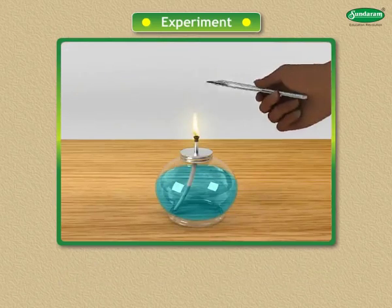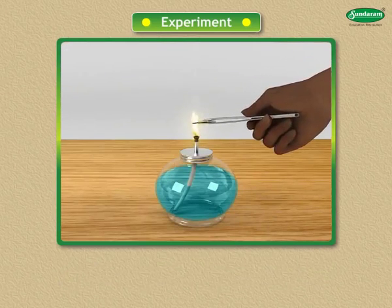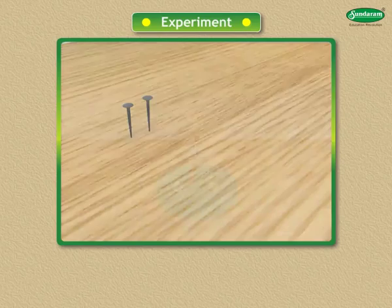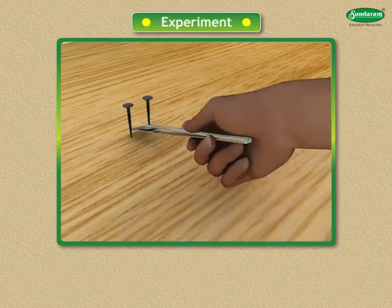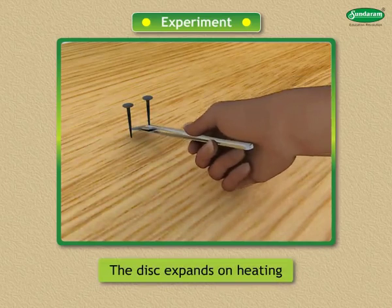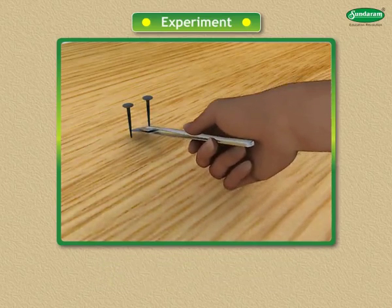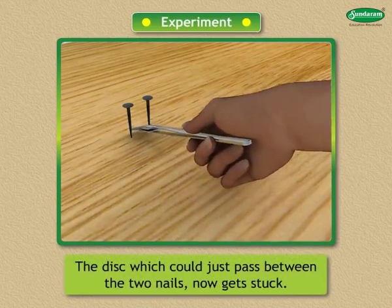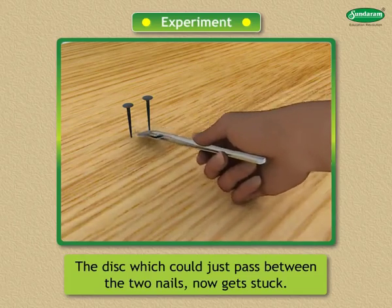Now holding the disc with tongs, heat it and try to pass it between the two nails. It gets stuck. The disc expands on heating. As a result, the disc which could just pass between the two nails now gets stuck.